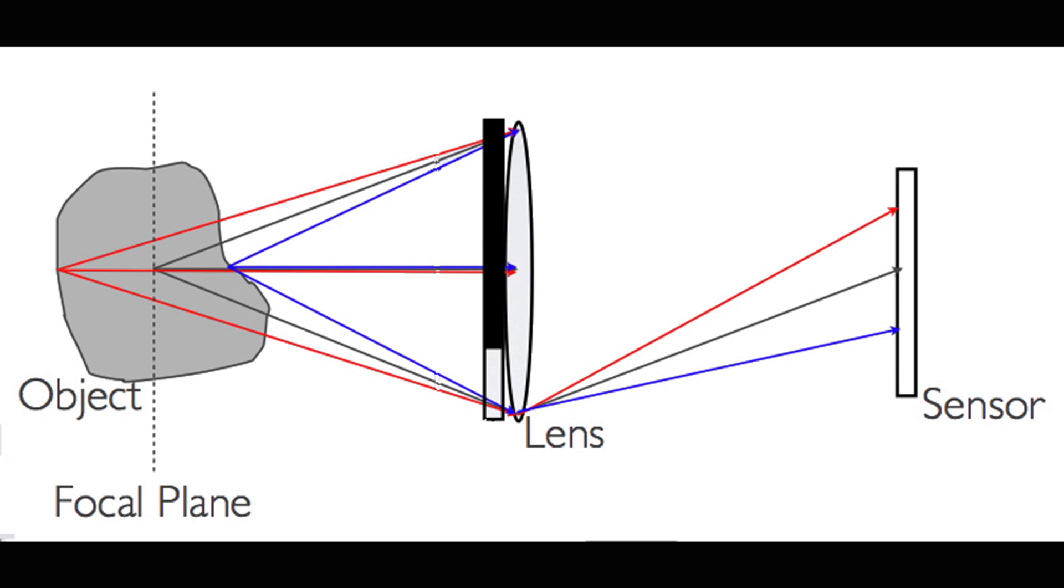From this information, we can determine that the gray rays emanate from a point on the focal plane, the blue rays come from a point in front of the focal plane, and the red rays come from a point behind it.